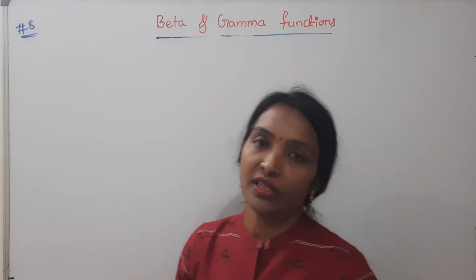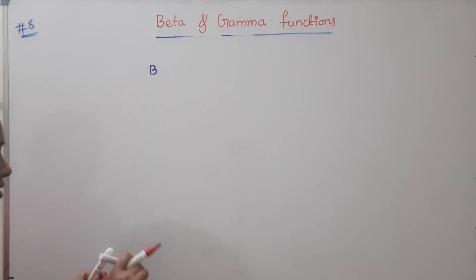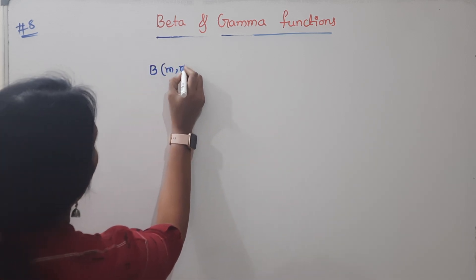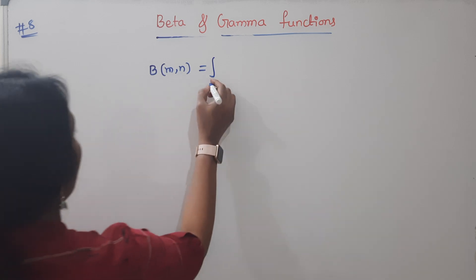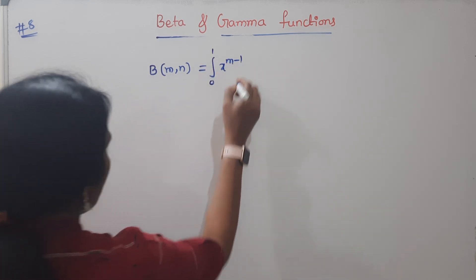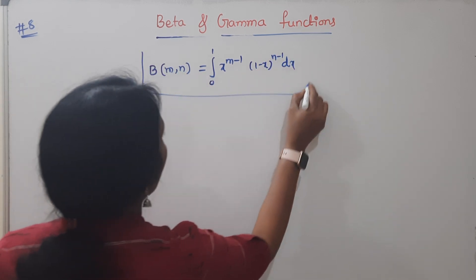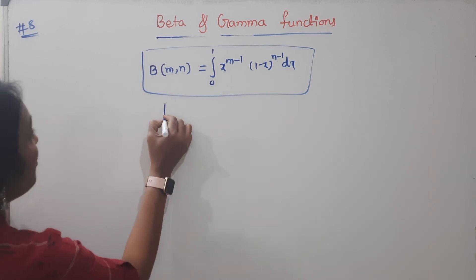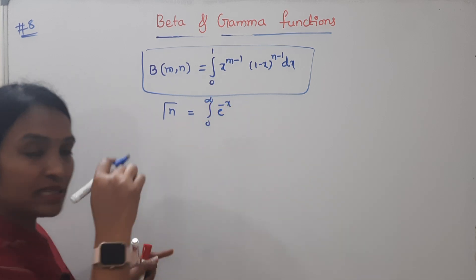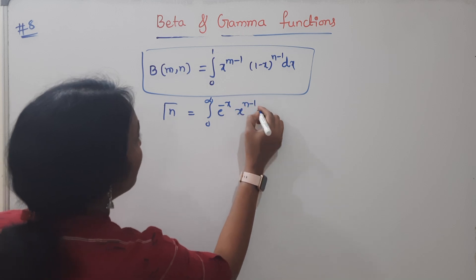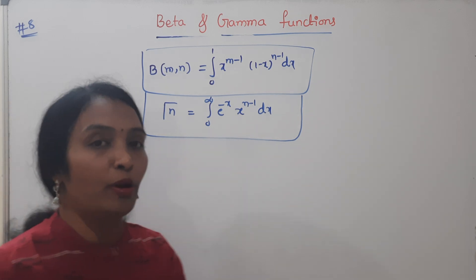Today we will discuss the gamma function. First of all, the beta function: B(m, n) is equal to the integral from 0 to 1 of x to the power m minus 1 times (1 minus x) to the power n minus 1 dx. The gamma function: gamma of n is equal to the integral from 0 to infinite of e to the power minus x times x to the power n minus 1 dx.